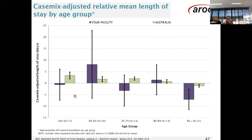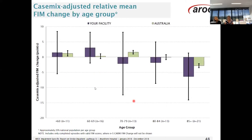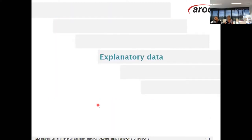This graph shows the case mix adjusted relative mean length of stay with age groups along the horizontal axis instead of ANSNAP classes or impairment groups. Looking at the under-60s age group, your service has a slightly shorter length of stay than expected, whereas nationally their length of stay is actually longer than expected. The same graph is then shown for FIM change by age group — in the under-60s group your service is achieving similar to Australia, which is a slightly higher than expected FIM change.